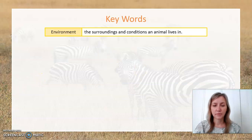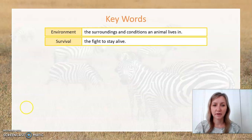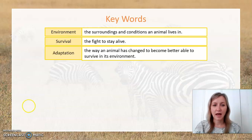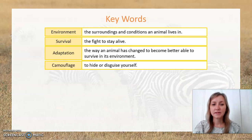Let's now look at the key words. Environment: the surroundings and conditions an animal lives in. Survival means surviving and fighting to stay alive. Adaptation is the way that an animal has changed to become better able to survive in its environment — that also applies to plants. To camouflage is to hide or disguise yourself, to blend in with your surroundings, usually to keep yourself safe from being spotted by predators.